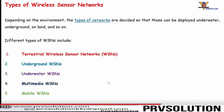Networks can be deployed underwater, underground, on land, and so on. Depending on deployment, we term these as terrestrial wireless sensor networks when deployed on earth, underground wireless sensor networks when sensor nodes are deployed under the ground, underwater wireless sensor networks when deployed under water, multimedia wireless sensor networks, and mobile wireless sensor networks.